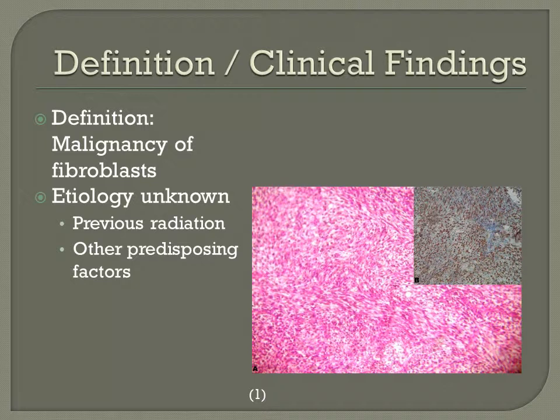The etiology is not completely known, but sometimes correlates with previous radiation exposure to that area. Other predisposing factors include genetic alterations, tissue damage due to heat or scarring, and disease processes such as Paget's disease of bone and osteomyelitis. Although these factors have been found to correlate with the occurrence of fibrosarcomas, one true cause of the neoplasm has not been found.